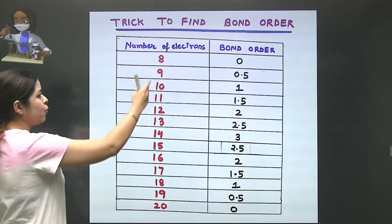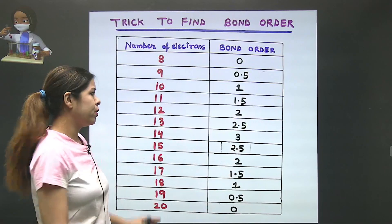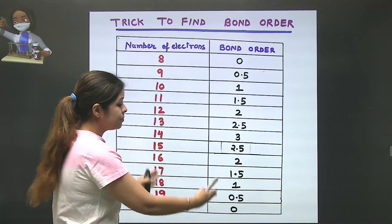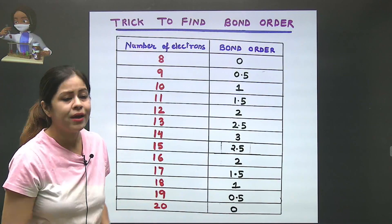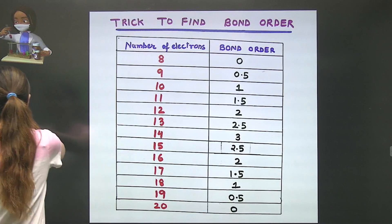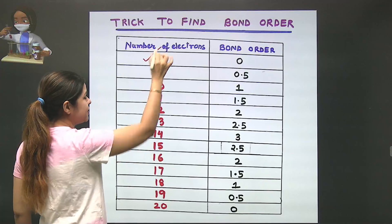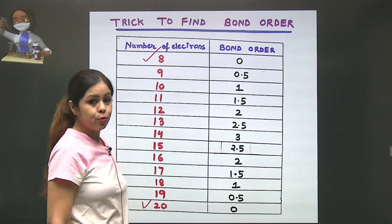In this table, you see the number of electrons in the first column and the bond order in the next column. Now you might think, why remember all of these? Don't worry. Just focus on this thing. It starts from 8 and goes till 20.